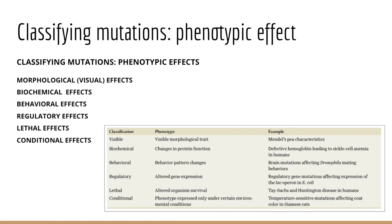Another way by which mutations can be classified is by phenotypic effect. We have this grid listing the various phenotypic effects that might be found: morphological or visible effects, biochemical effects, behavioral, regulatory, lethal, and conditional. Morphological effects — sometimes referred to as visible or visual effects — modify our outward appearance as an individual, impacting the phenotype based on physical characteristics like shape, size, color, or number of given structures. Mendel's pea experiments were studies considering these visible or morphological effects.